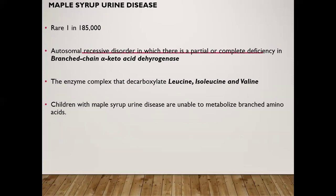Maple syrup urine disease is rare, with a prevalence of one in 185,000. It is an autosomal recessive disorder with partial or complete deficiency of branched-chain alpha-keto acid dehydrogenase — the enzyme complex that decarboxylates leucine, isoleucine, and valine. Children with this disease are unable to metabolize branched-chain amino acids, and these amino acids and their alpha-keto acid byproducts accumulate in the blood, causing toxic neurologic effects.